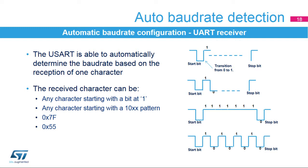For a 0x7F character frame, the baud rate is updated first at the end of the start bit, then at the end of bit 6. For a 0x55 character frame, the baud rate is updated first at the end of the start bit, then at the end of bit 0, and finally at the end of bit 6. In parallel, another check is performed for each intermediate transition of the RX line.